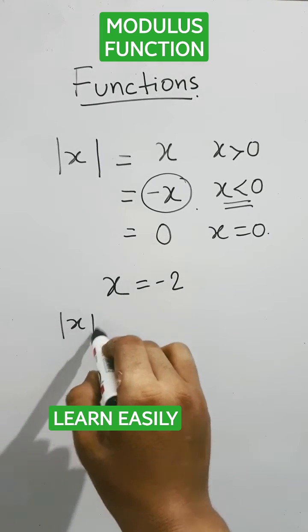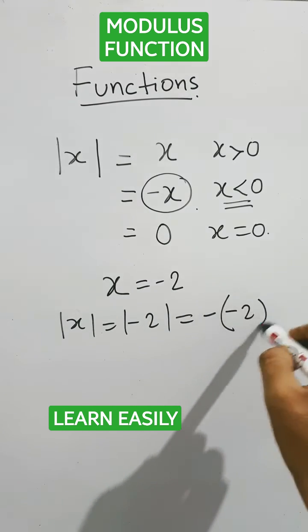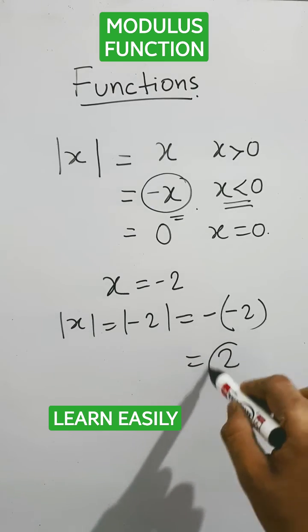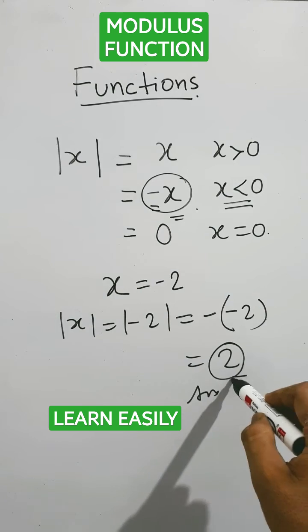Then modulus of x, that is modulus of minus 2, equals minus of minus 2 as we mentioned in the formula. So that is positive 2. Thus this minus sign converts this into positive value.